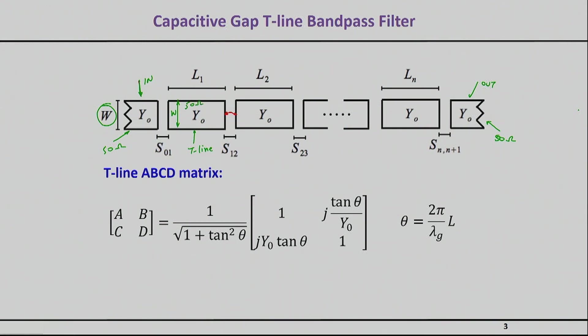Given this assumption, which is often suboptimal, the question is: you have to find out the lengths of these transmission lines — how long each one should be — and the gaps. These are the unknowns. The synthesis process I will show you will answer exactly this question.